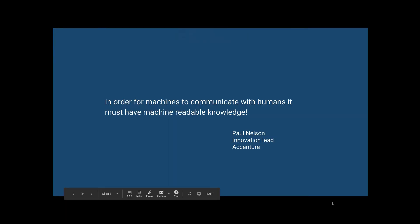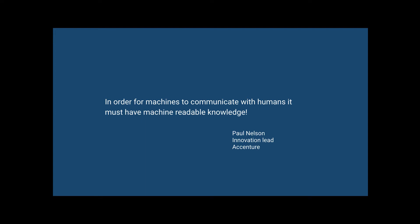We're going to now take a look at the principles that make this possible. The first principle is that machines are not humans. In order for them to communicate with humans, they need machine-readable knowledge. The way this project was created was that Holocaust survivors recorded their experience, and then the chatbot developers went in and added meta information so that the conversation could become machine-readable and they could develop answers to users' questions.